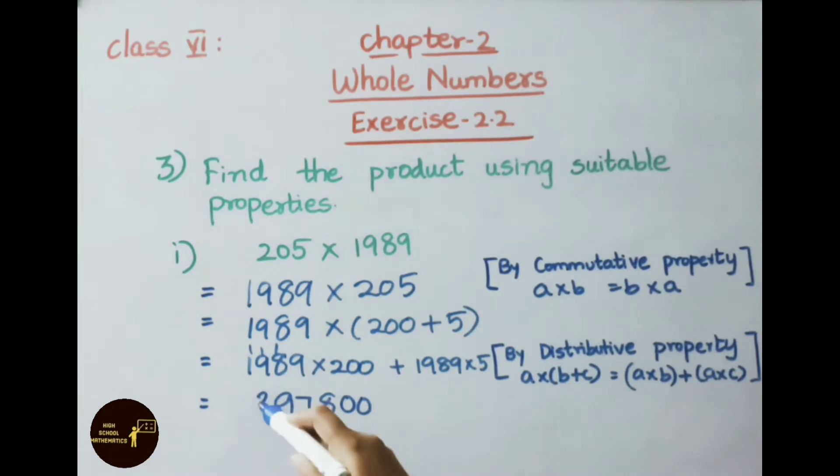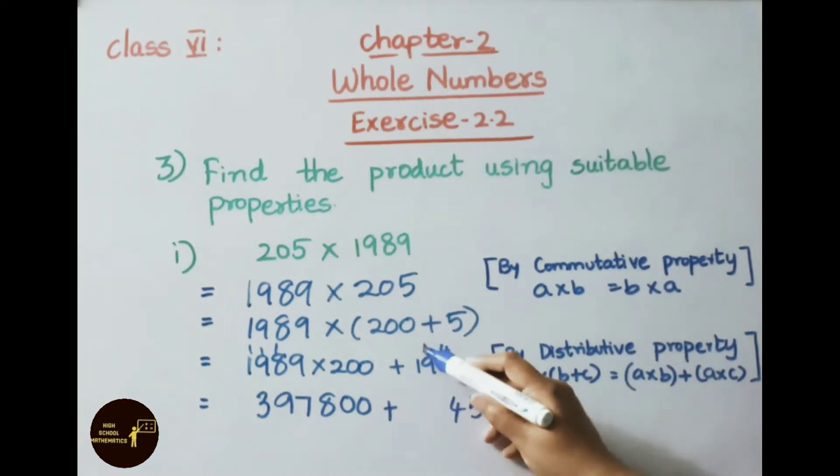Plus, multiply 1989 into 5. 5 nines are 45, 5 carry 4. 5 eights are 40 plus 4, that is 44, 4 carry 4. 5 nines are 45 plus 4, that is 49, so write down 9 carry 4. 5 ones are 5 plus 4, that is 9. So 397,800 plus 9,945.